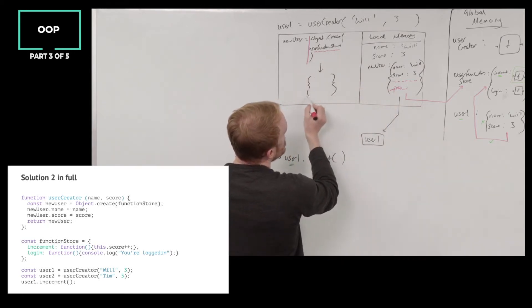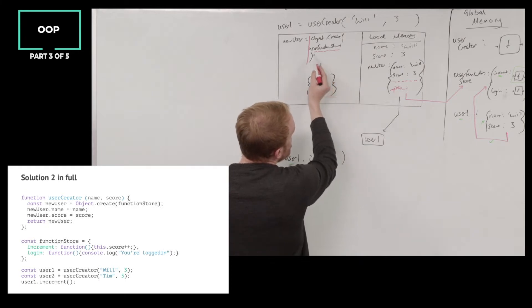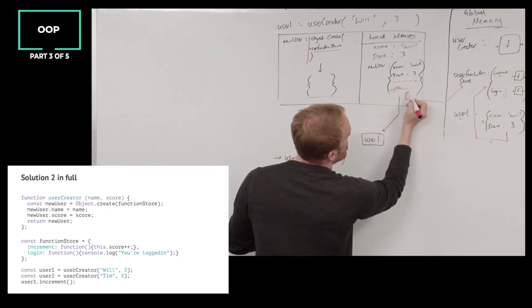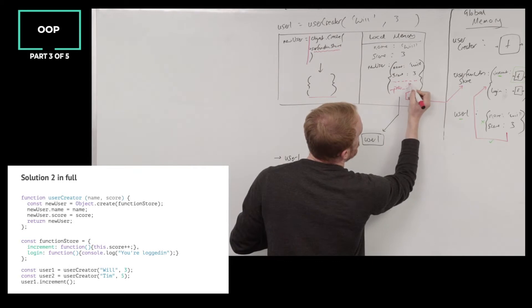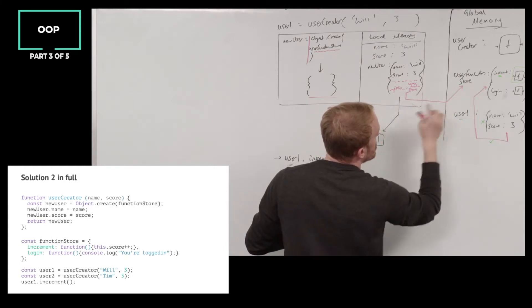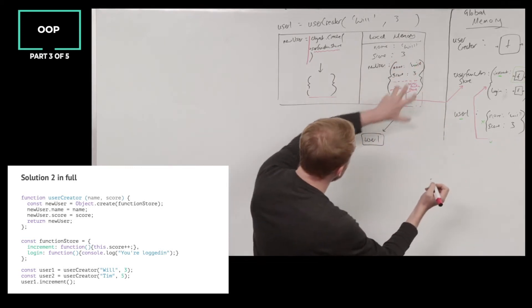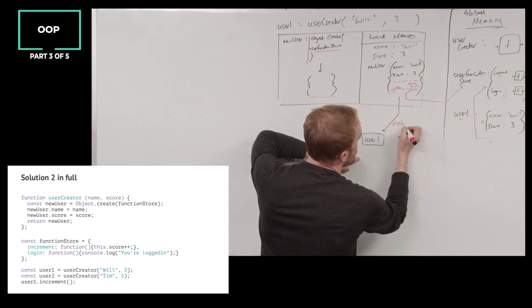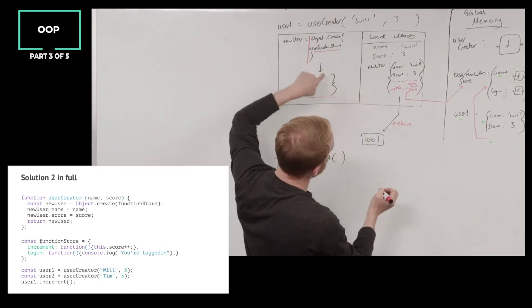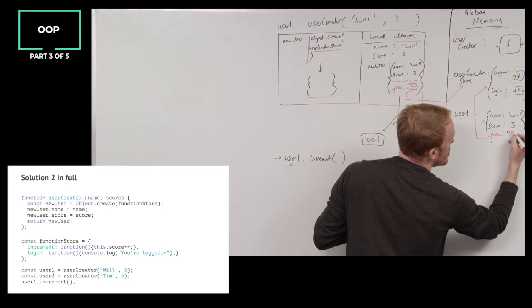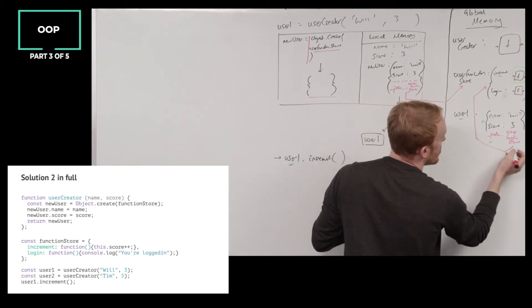When we declare our empty object using the Object.create technique, which we know just creates an empty object, it gets this hidden property — underscore proto underscore — set to whatever we passed in, which was userFunctionStore. A bond up to userFunctionStore. And that doesn't go away. Once we return that object out into user1, it still has that underscore proto underscore bond to userFunctionStore.